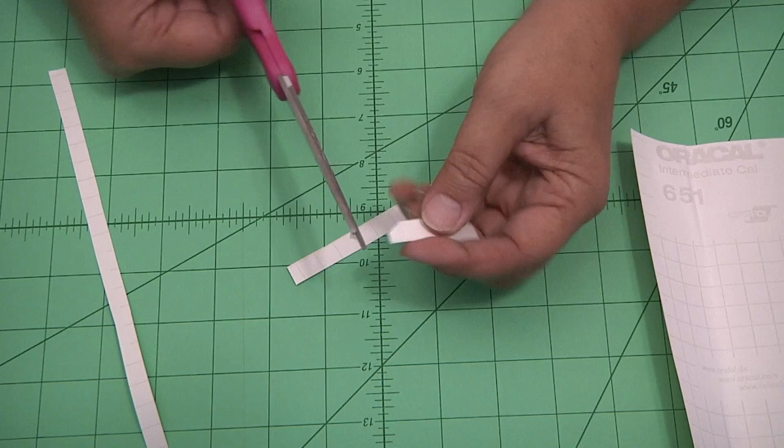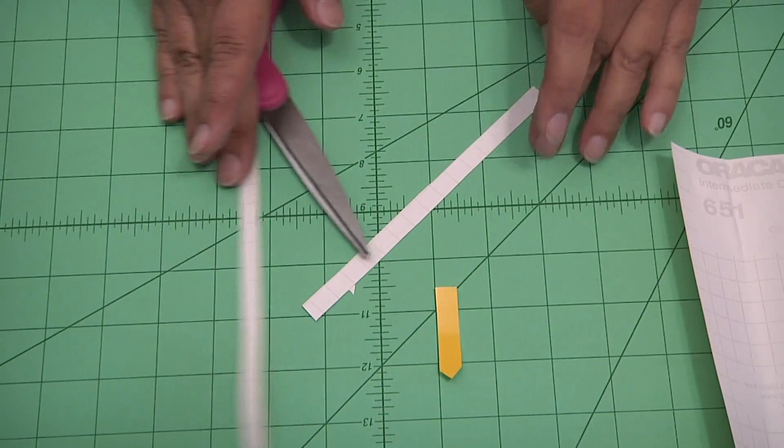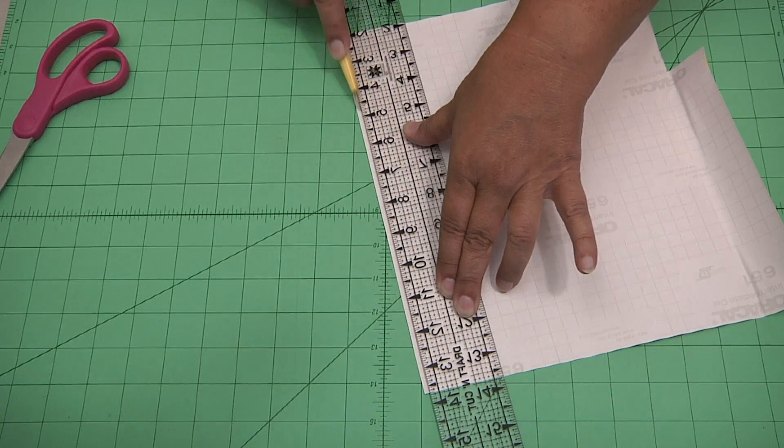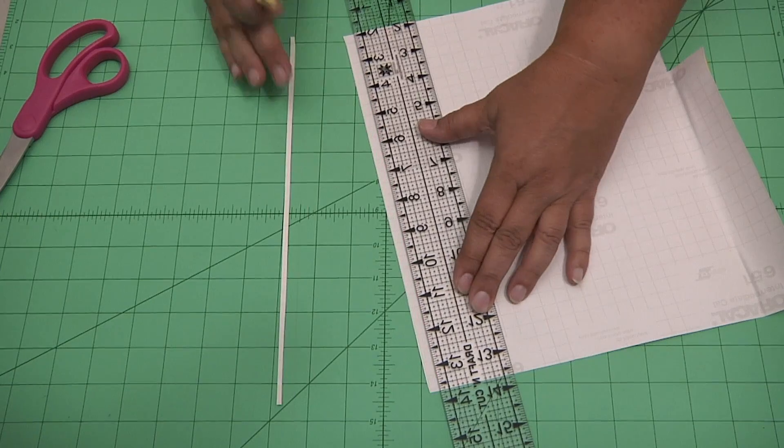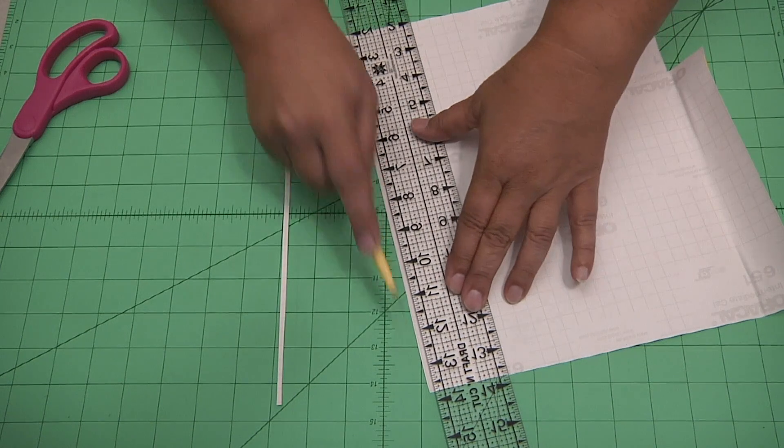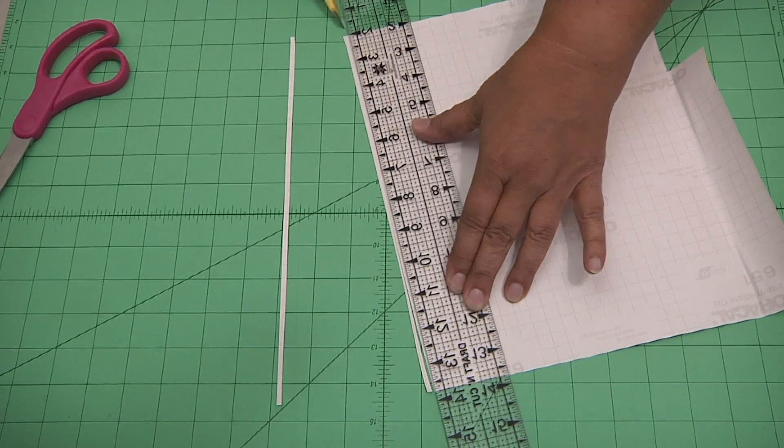Once you've done that, trim the tip off to give it the tip of a fence post. You're going to do this 16 times. With a ruler and a craft knife, go ahead and cut approximately an eighth of an inch strips. These strips are what you're going to use to attach around the fence post to bring it all together.